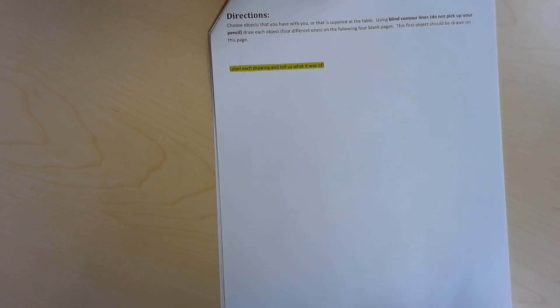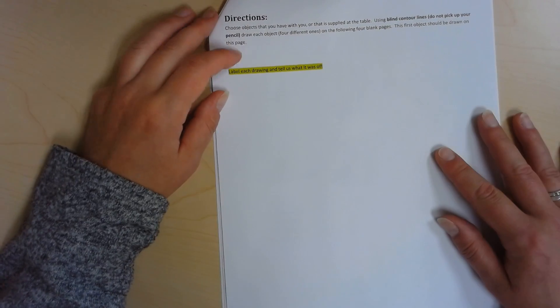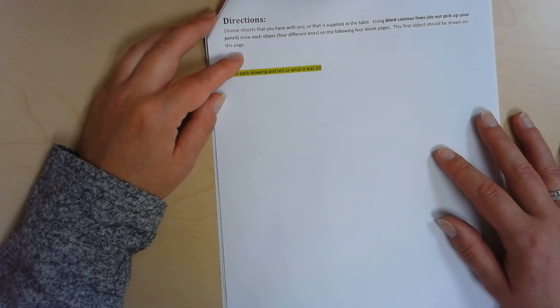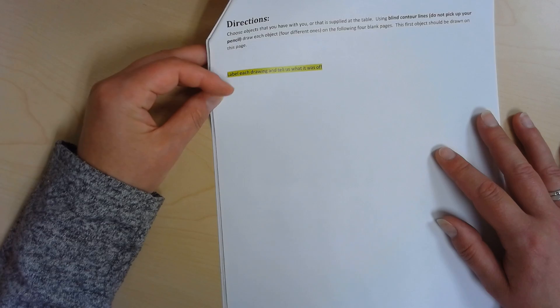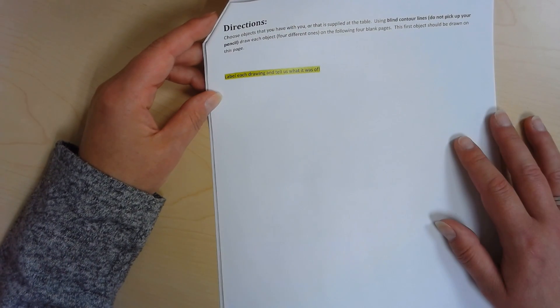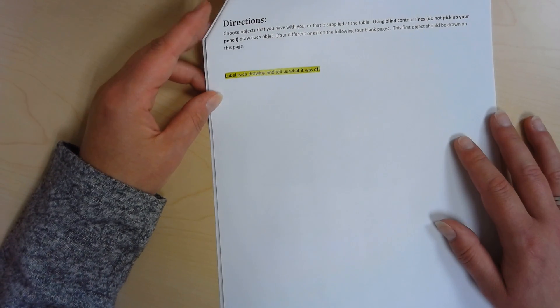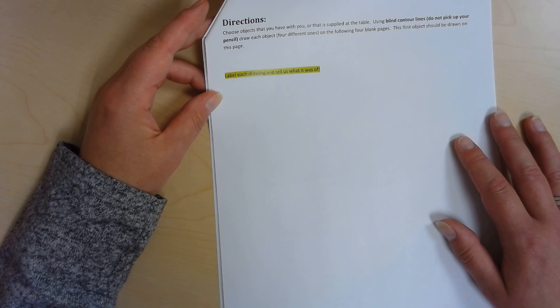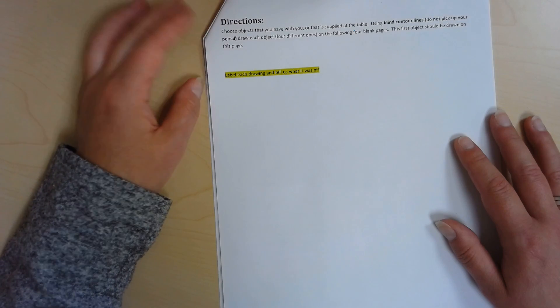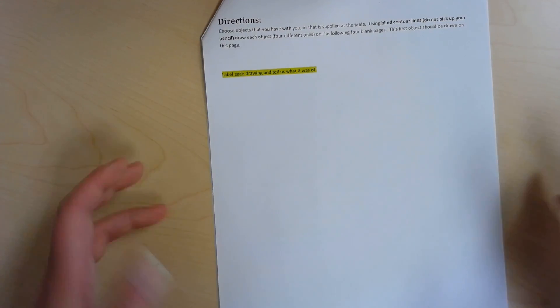And you never pick your pencil up, so it's a continuous line that never stops. So you're gonna choose objects that you have with you or that I supplied at the table for you, depending if you're virtual or not. Using blind contour lines, do not pick up your pencil, draw each object. I will have four different ones for you to draw on the following four blank pages.